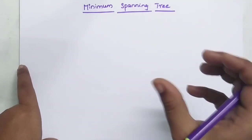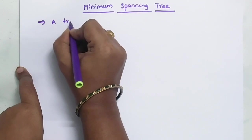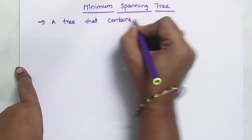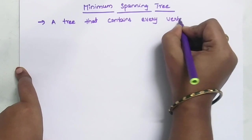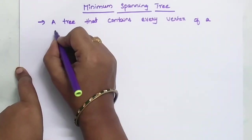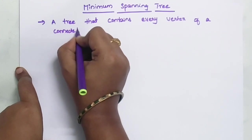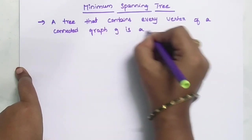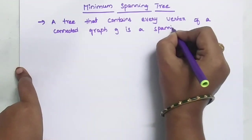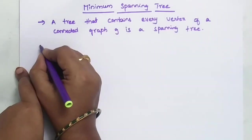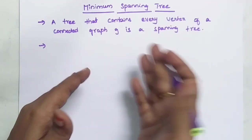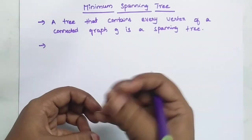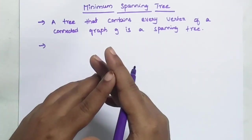First of all, what is a spanning tree? A spanning tree is a tree that contains every vertex. In each and every graph, based on every vertex, we form a connected graph. The subgraph we form by connecting all vertices is what we call a spanning tree. For example, this is a minimum spanning tree. We take a weighted graph — a graph with weights on edges — and based on the minimum weights among those, we find the minimum spanning tree.